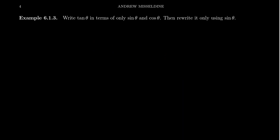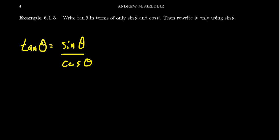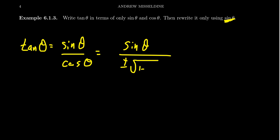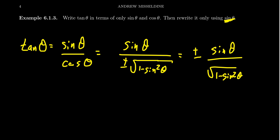Take the trigonometric function tangent. By the ratio identity, tan θ = sin θ / cos θ. Could we rewrite this using only sine? The sine in the numerator is fine, but for the cosine in the denominator we use cos θ = ±√(1 − sin² θ) from the Pythagorean identity. Be aware that expression doesn't simplify further — you can't distribute a square root across a sum or difference. So tan θ = ±sin θ / √(1 − sin² θ), where plus or minus depends on the quadrant.